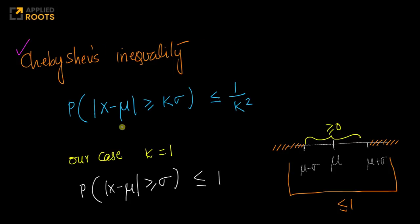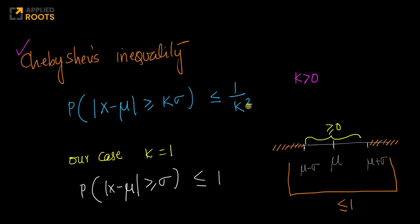What Chebyshev's inequality says is this: given a random variable x with mean mu, standard deviation sigma, and k is any value greater than 0, the probability that the absolute value of (x minus mu) is greater than or equal to k*sigma is less than or equal to 1/k².